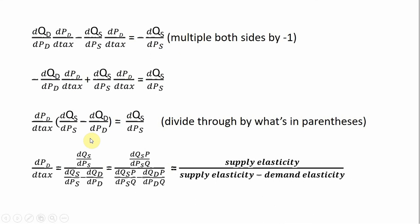Once that result is established, I'm going to factor out the change in the price paid by buyers divided by the change in tax on the left-hand side, and then divide everything through by what's in parentheses. That leaves us with the derivative of the supply equation with respect to price divided by the derivative of the supply equation with respect to price minus the derivative of the demand equation with respect to price. Finally, we multiply every term on the right-hand side by the ratio of price to quantity — and you'll now recognize these are price elasticity formulas. The numerator is the price elasticity of supply, and the denominator is the price elasticity of supply minus the price elasticity of demand. I hope you found this proof helpful.